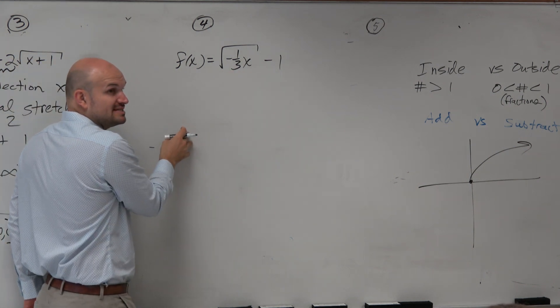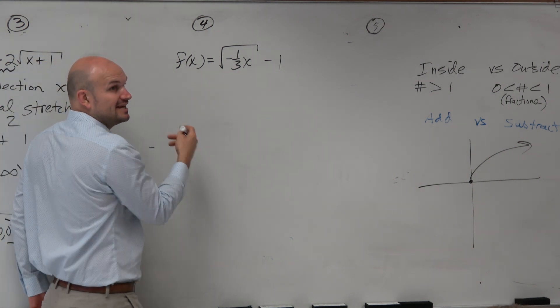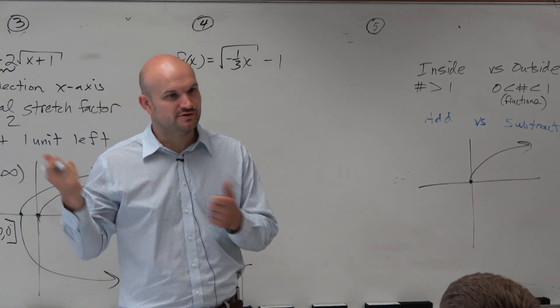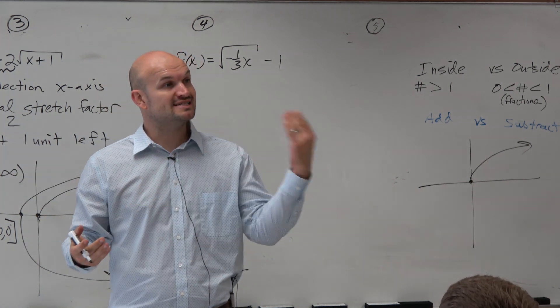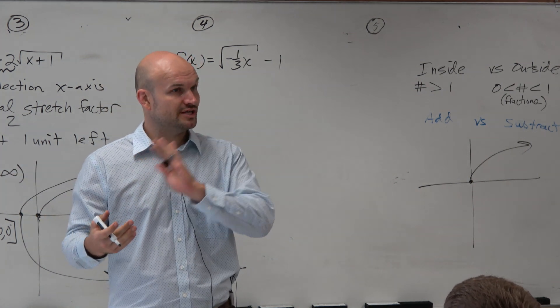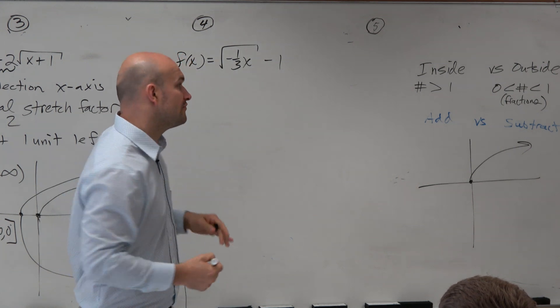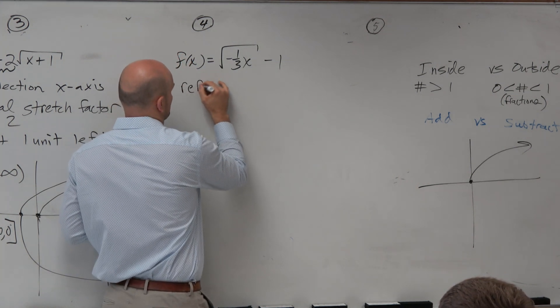Now, again, we see some inside stuff, right? So now we say, oh, it's a negative on the inside. So now I have to have a horizontal reflection. If I'm going to reflect something horizontally, that's going to be a reflection about the y-axis.